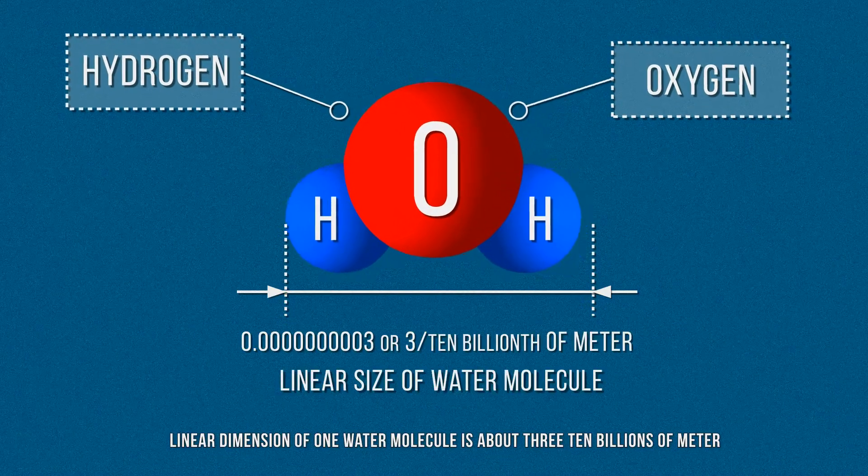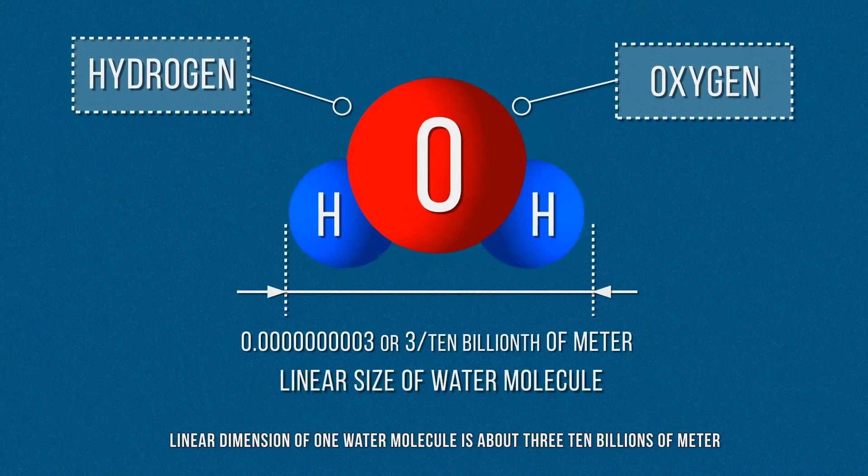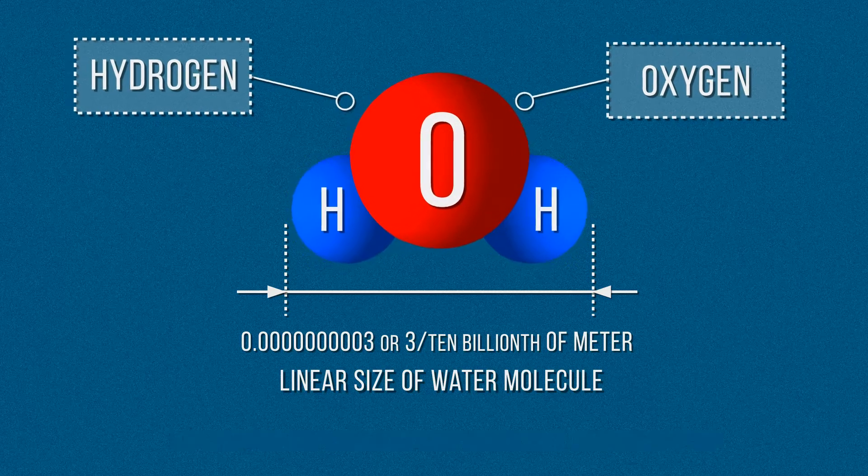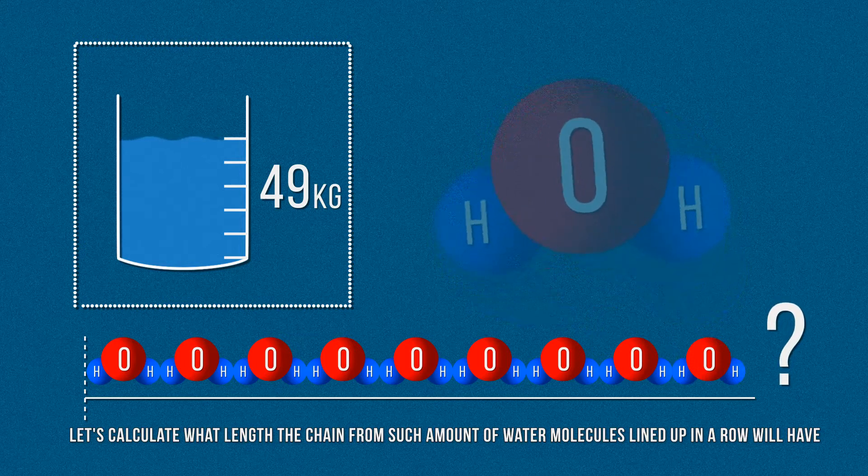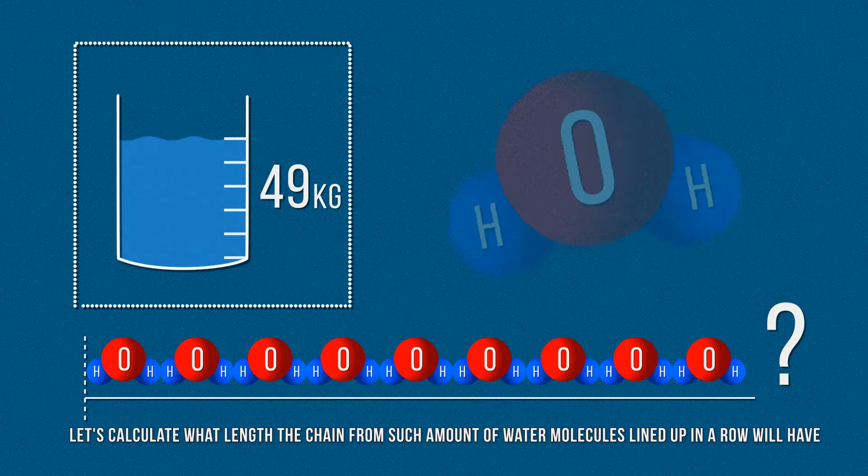Linear dimension of one water molecule is about 3 ten billionths of a meter. Let's calculate what length the chain from such amount of water molecules lined up in a row will have.